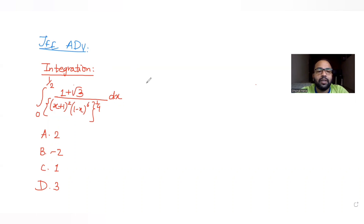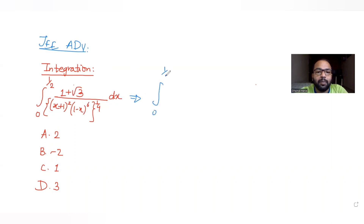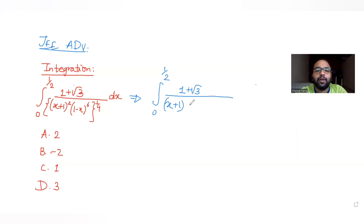The first step is to expand the expression inside the bracket. With limits 0 to 1/2, we get 1 plus √3 upon (x+1) raised to 2×(1/4), and then (1−x) raised to 6×(1/4), giving exponents of 2/4 and 6/4 respectively.